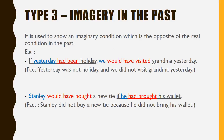Type 3: Imaginary in the Past. It is used to show an imaginary condition which is the opposite of the real condition in the past. For example: 'If yesterday had been a holiday, we would have visited grandma yesterday' — the fact is yesterday was not a holiday and we did not visit grandma. Another example: 'Stanley would have bought a new tie if he had brought his wallet' — the fact is he did not bring his wallet.